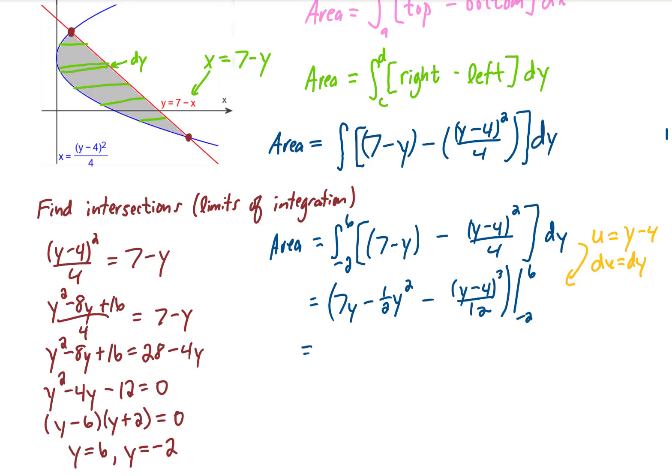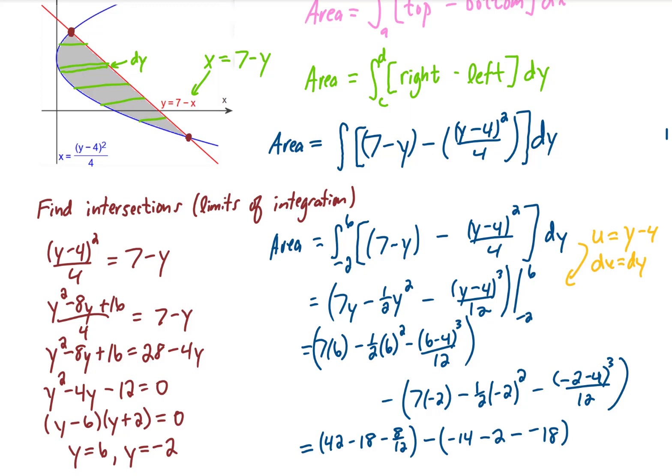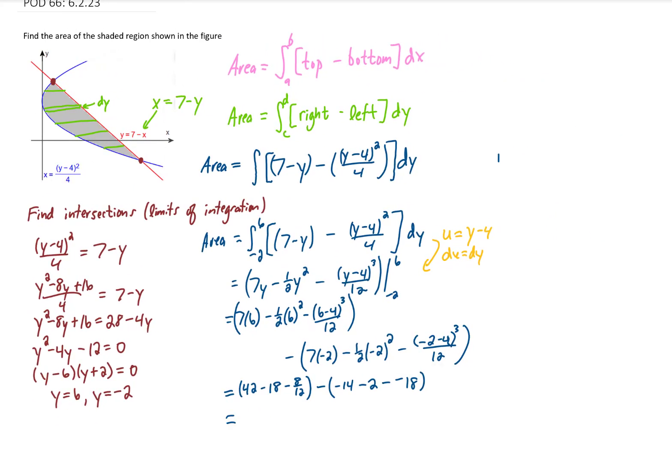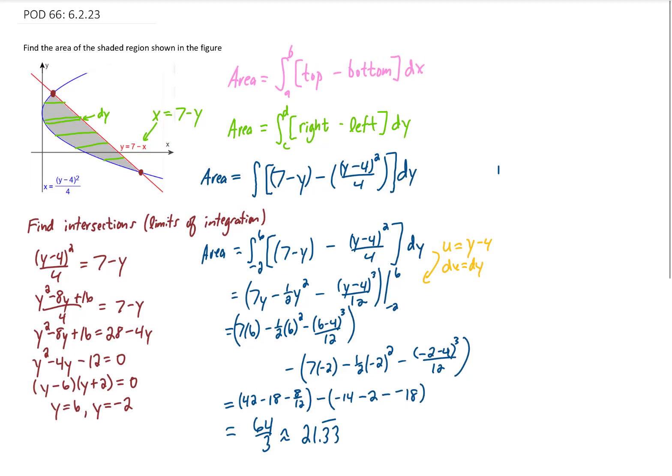Now we need to evaluate this. Our upper limit of integration is 6. We need to subtract our lower limit of integration, which is negative 2. Perhaps we can simplify each one of these terms a little bit. And in our final step, we will just simplify all of this to get our answer. And I am getting 64 thirds or 21.33 repeating square units as the area of the shaded region in this problem.